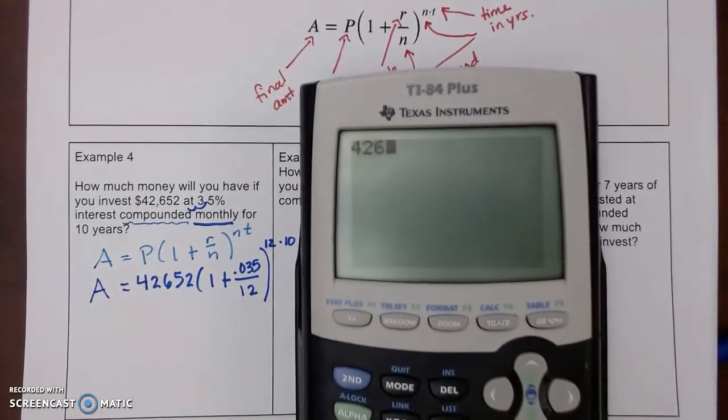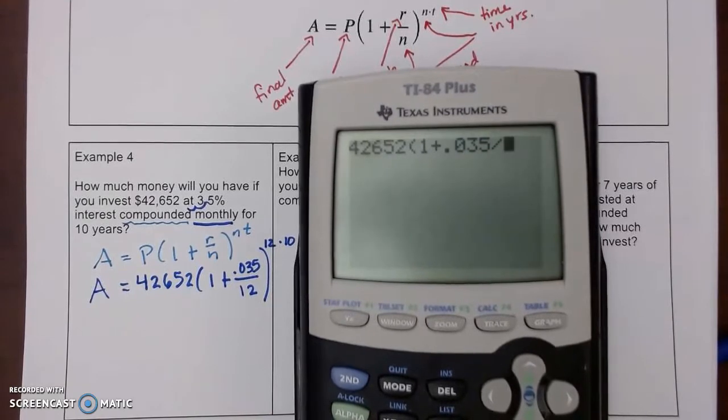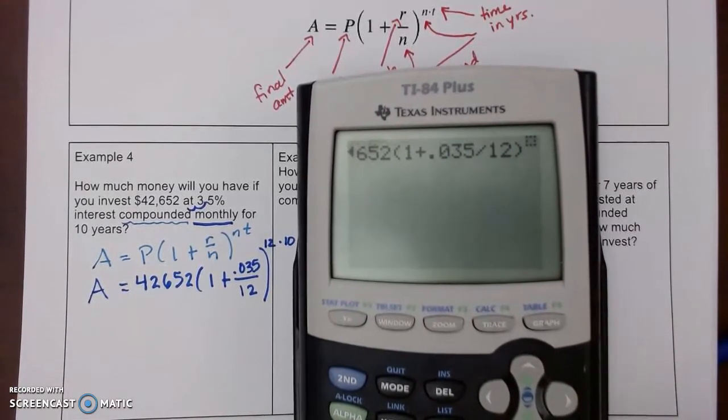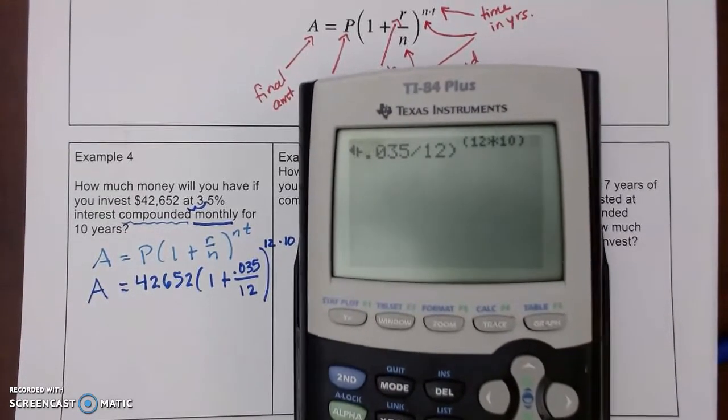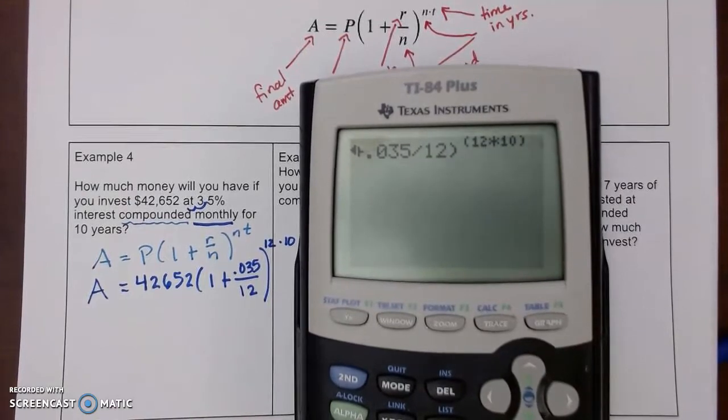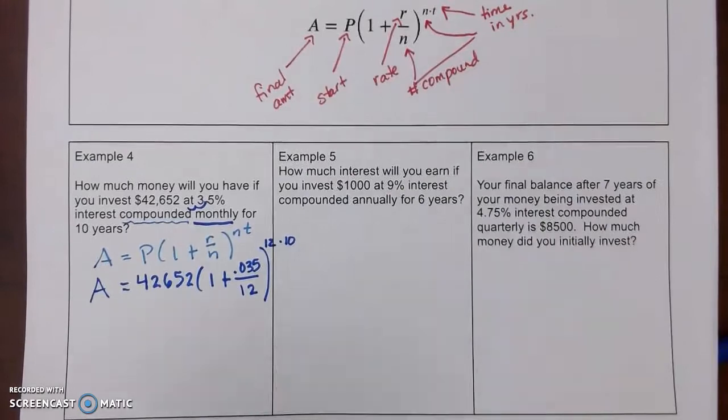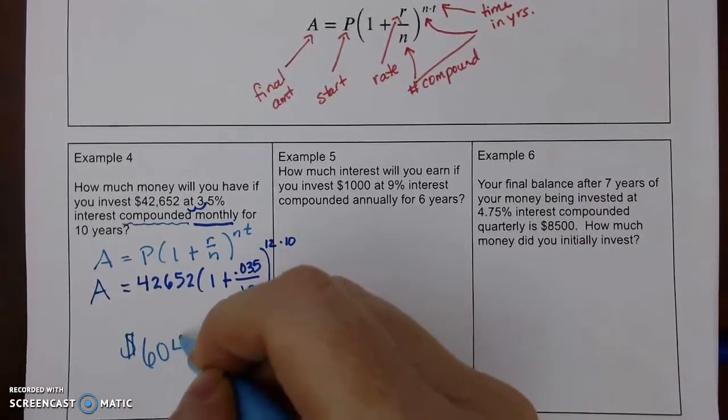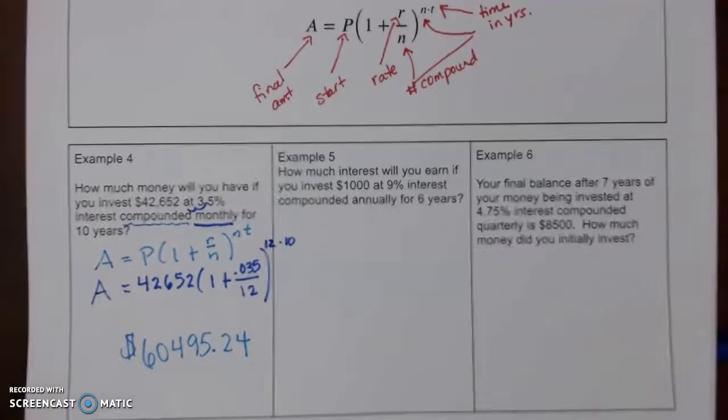So, I've got 42,652, 1 plus 0.035 divided by 12. And then my power. I'm going to use parentheses because I want to make sure it does 12 times 10 together. And this is money. So, I'm going to make that 24 cents. And that's how much money we'll have.